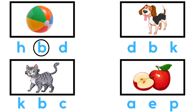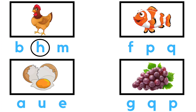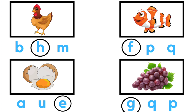B for Ball, D for Dog, C for Cat, A for Apple. H for Hen, F for Fish, E for Egg, G for Grapes.